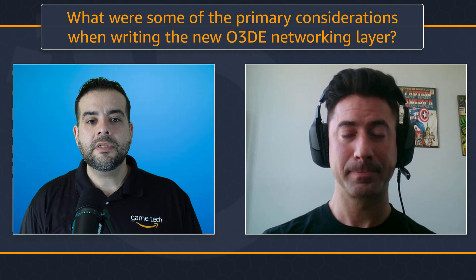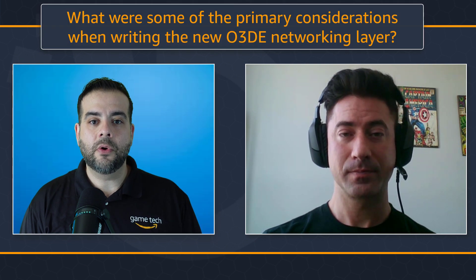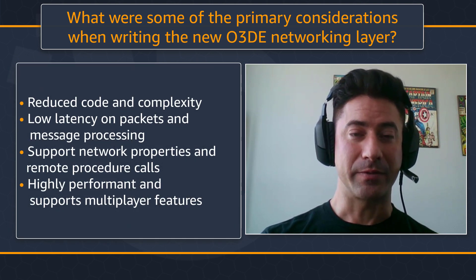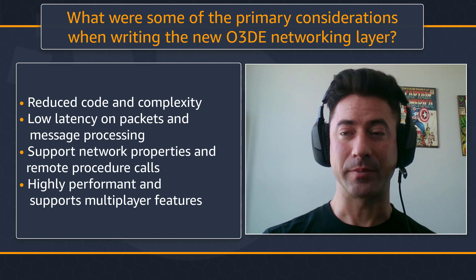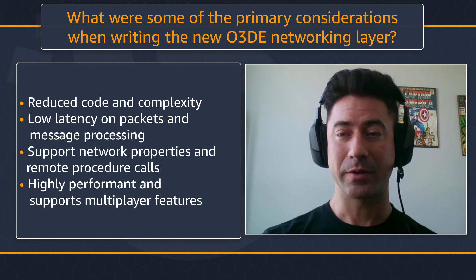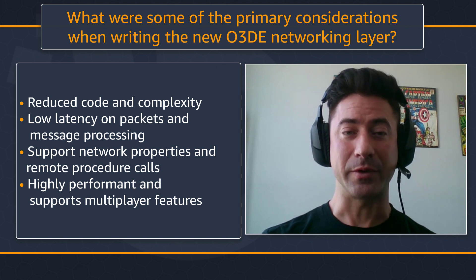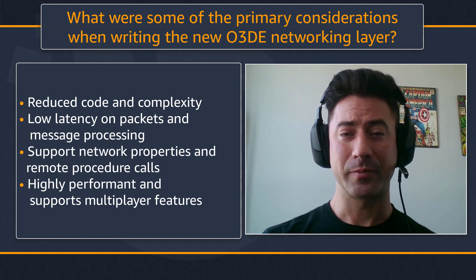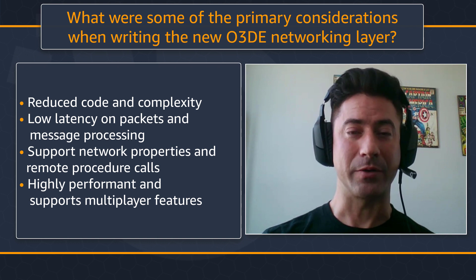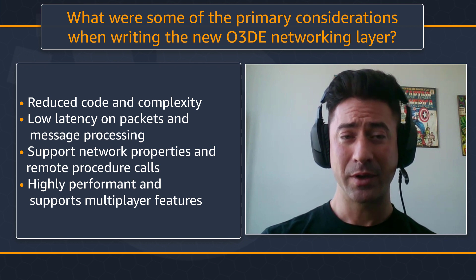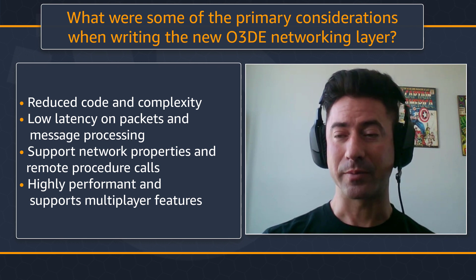So what are some of the primary considerations when writing the new O3DE networking layer? We really wanted something that was simple, fast, and efficient, so we focused on having a very small code size and very reduced complexity. It was important for us that we have very low latency on packet send and receive operations, as well as low overall message processing overhead, especially any sort of head-of-line blocking or ordering constraints that the transport layer might impose upon the application traffic, because that has a very negative impact on latency.